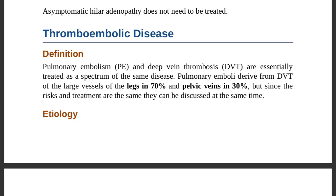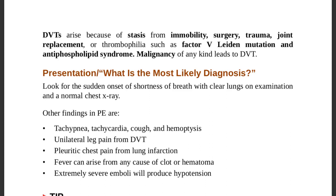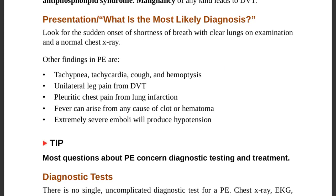DVTs arise from stasis due to immobility — from major surgery, trauma, joint replacement, thrombophilia such as Factor V Leiden mutation, antiphospholipid syndrome, or malignancy of any kind. Malignancy of any kind leads to DVT. Look for sudden onset of shortness of breath with clear lungs on examination and a normal chest x-ray.